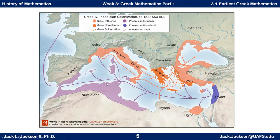Another big culture present at the same time was the Phoenicians. This area in the darker purple was the Phoenician homeland, and this darker area was the original part of Greece. The Phoenicians really expanded and traveled all the way out — it looks like they even went up into the southern part of Great Britain. Both the Phoenicians and the Greeks traveled a lot by ship. You can see the areas they colonized or had significant influence over early on.